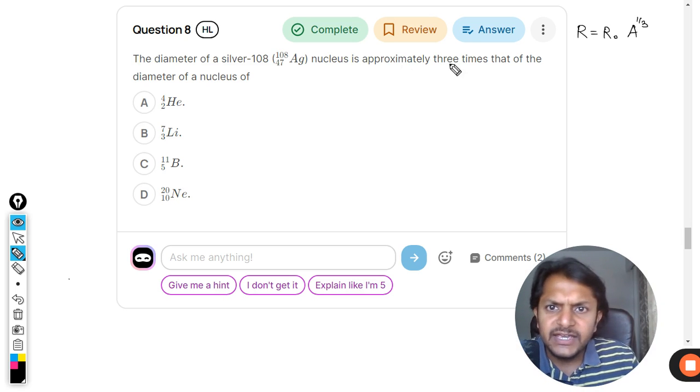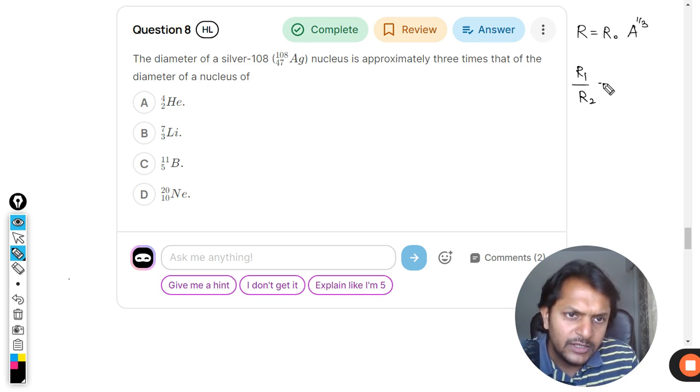So in the case of silver, okay, first of all, let us create a formula. R1 by R2 is equal to A1 by A2 raised to power of 1 by 3.